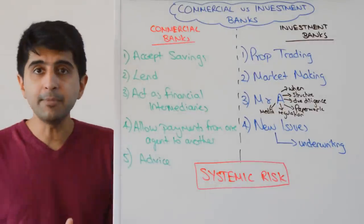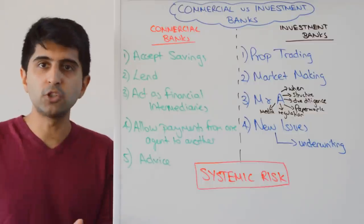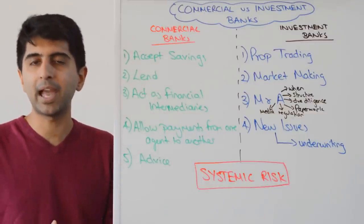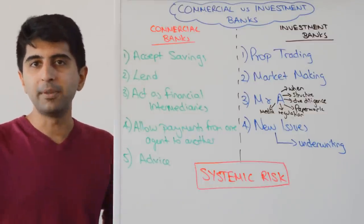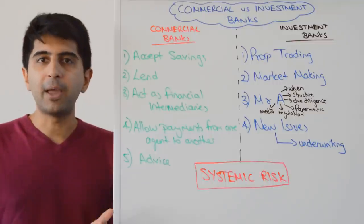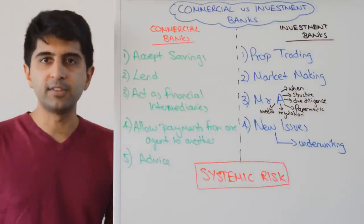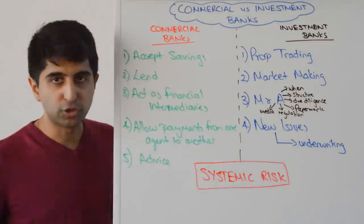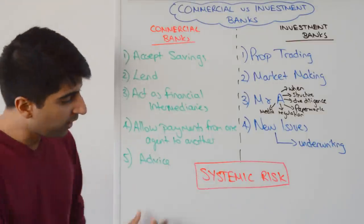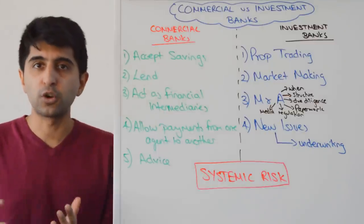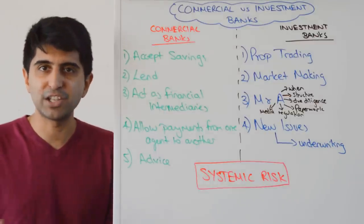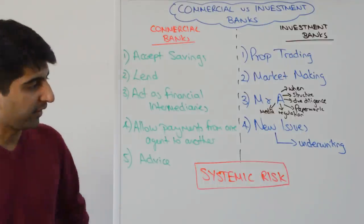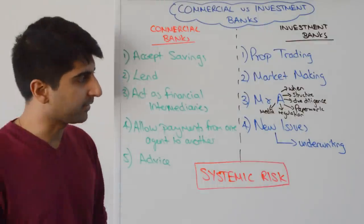Commercial banks also allow payments from one agent to another — you can divert funds from your bank account to businesses, for example, if you want to pay for goods and services. That's a very important function that commercial banks have. They also offer advice: insurance advice, financial advice. That is another key function that commercial banks have.